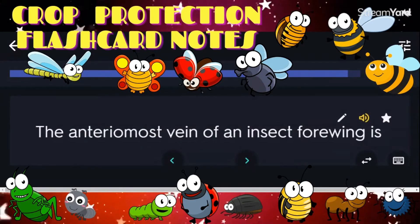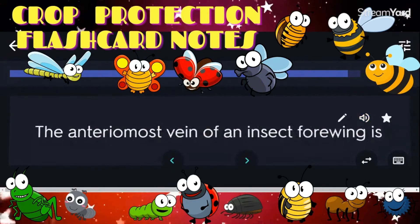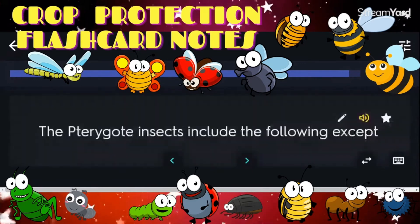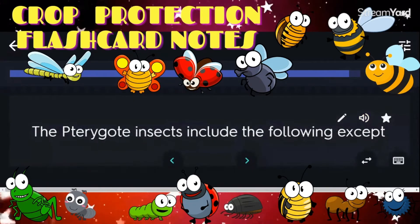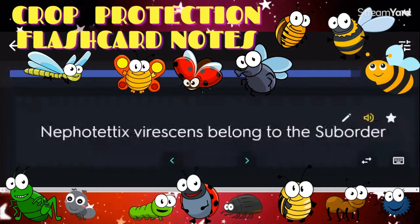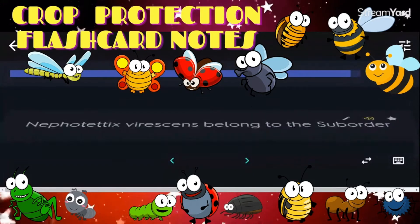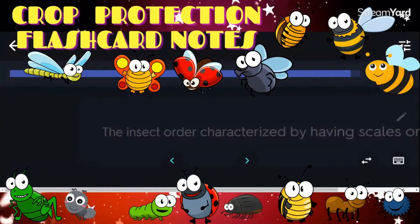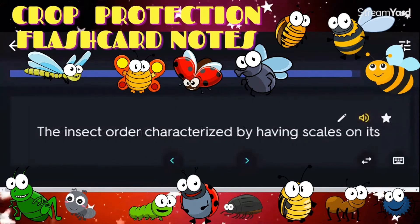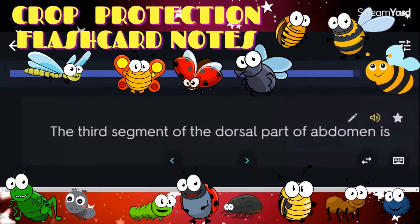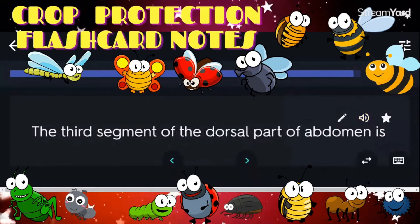The anteriormost vein of an insect four-wing is the costa. The pterygote insects include the following except Odonata. Nilaparvata virucens belongs to the suborder Homoptera. The insect order characterized by having scales on its wings: Lepidoptera. The third segment of the dorsal part of the abdomen is T3.